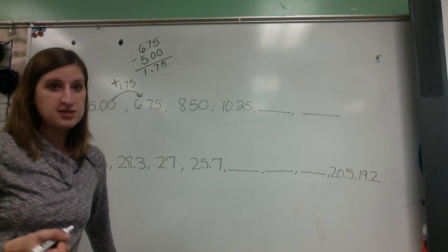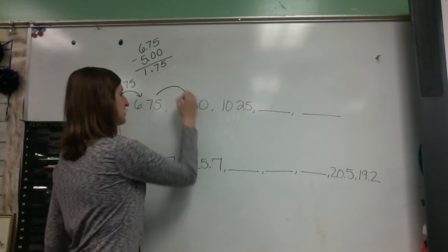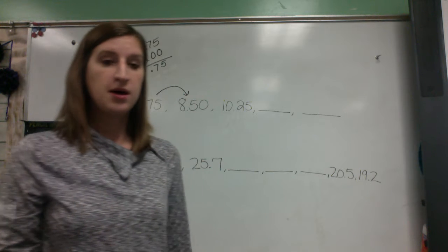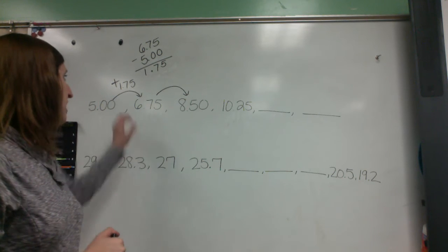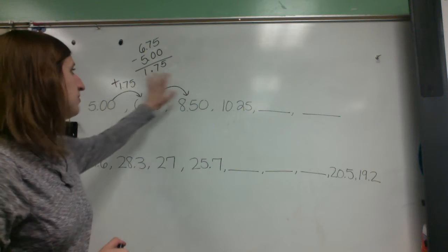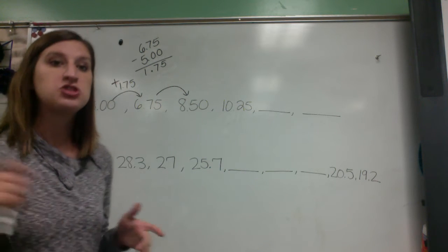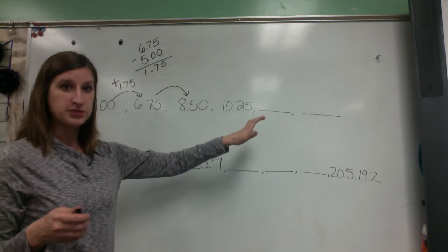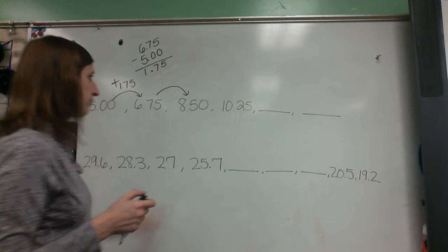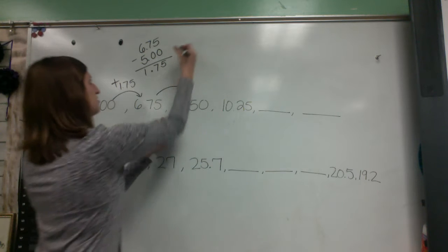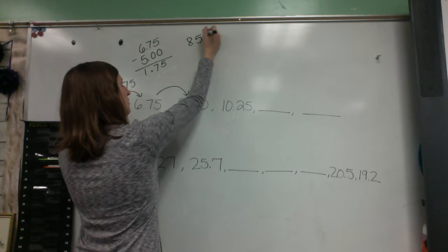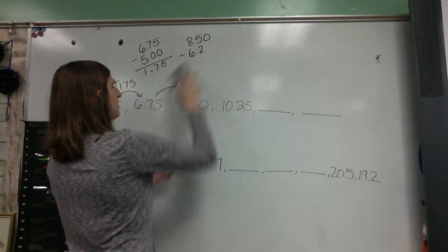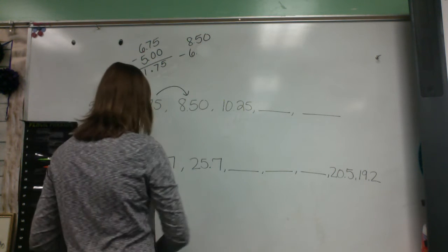Now I'm going to double check that the same thing is happening on the next number because some of our patterns get pretty complex. And so sometimes they might increase by this and then they might increase by double that on the next one. So we need to just double check that what we have is right and what we have is occurring on down the line of this pattern. So it never hurts just to check between these two numbers as well.